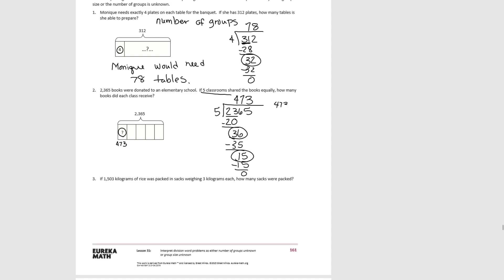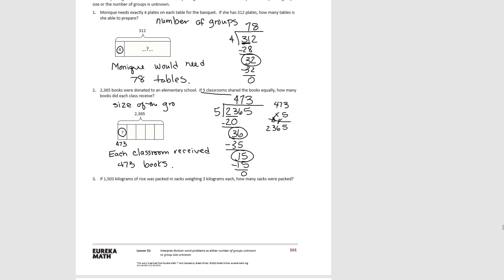Each classroom gets 473 books. We check with multiplication: 3×5=15, 7×5=35 plus 1 is 36, 4×5=20 plus 3 is 23. Calculations check out. Notice how the tape diagrams look different: in one problem the unknown is the number of books per group; in the other the unknown is how many groups there are.